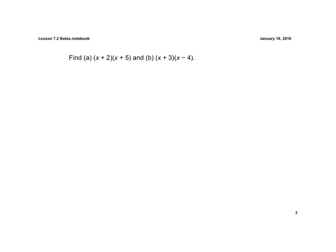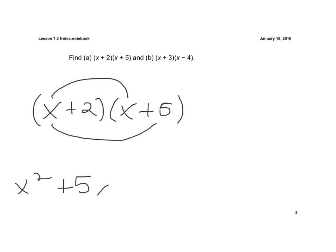So on A, I'll go ahead and use the FOIL method. X plus 2 times X plus 5. Again, you go first times first. That's X squared. Outside times outside is X times 5, which is plus 5X. Inside times inside is plus 2X. And then last times last is plus 10.